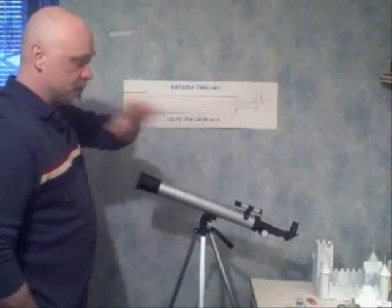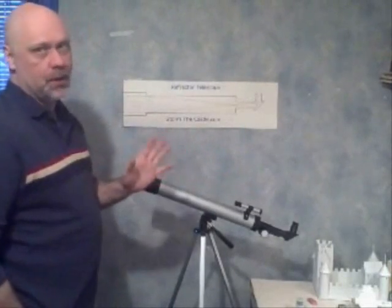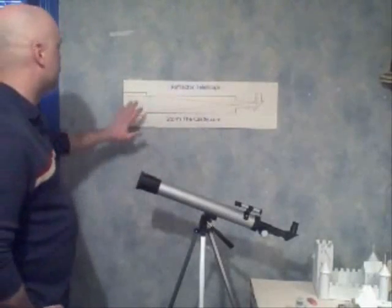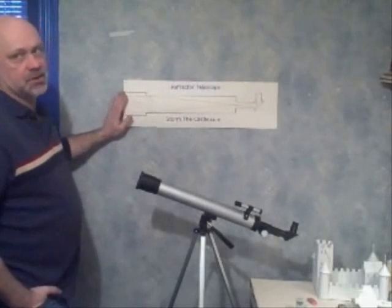This is your basic refractor telescope, and the big thing here is that at the top of the telescope there's a big lens. You can see that on the chart here. There's a big lens at the top of the telescope.